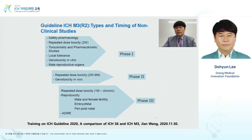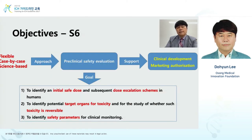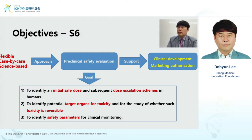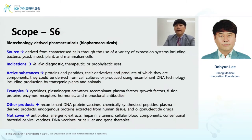This is from Gene Wang's presentation last year from Canada regarding M3 and S6. M3 talks about the timing of non-clinical safety study. The objective of the S6 guideline includes three items: first, to identify an initial safe dose and subsequent dose escalation scheme in humans; second, to identify potential target organs for toxicity and whether such toxicity is reversible; and third, to identify safety parameters for clinical monitoring.